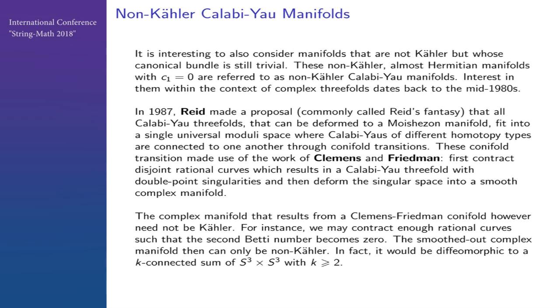This was a proposal that Reid made. It's a beautiful speculation that all manifolds can be linked together through conifold transitions. You first contract the strong rational curve, which results in singularities with double points, then deform the singular space into a smooth manifold. If this works, every manifold will be linked birationally to another manifold after deformation. Therefore, the smooth topology can be recognized as S3 cross S3—just like a handlebody surgery.